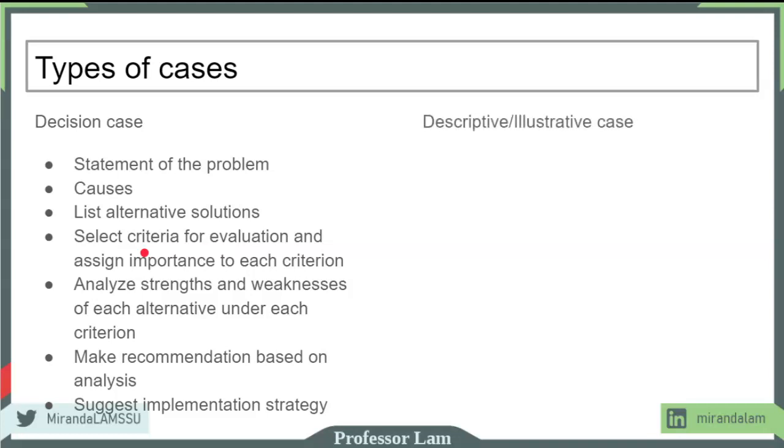Another type of case is called a descriptive or illustrative case. These cases, the protagonist is not at a central decision point, but rather is describing events that have happened. The case tells you what had happened. You're not trying to solve a problem, but rather infer from the case things that you have learned. This is a knowledge creating situation.